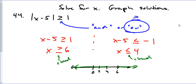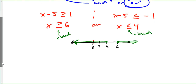Because we have this gap between the two regions, this is an OR statement. Our answer is: x can be less than or equal to 4, or x can be greater than or equal to 6.